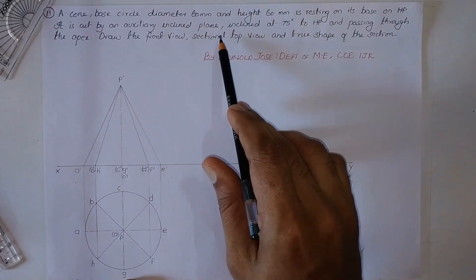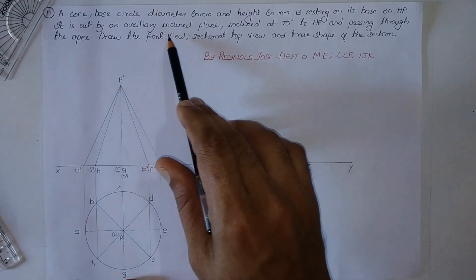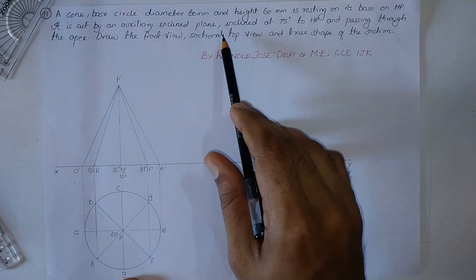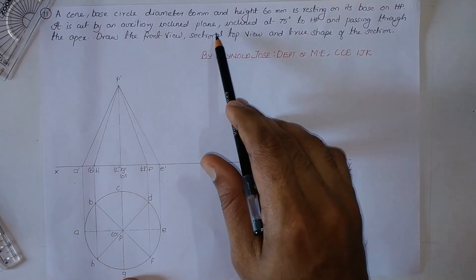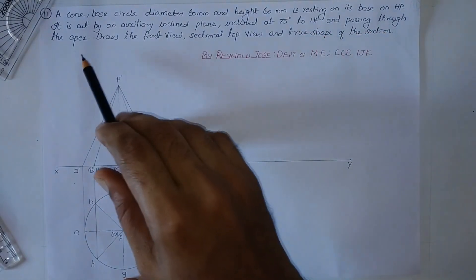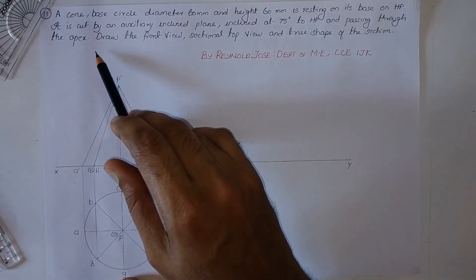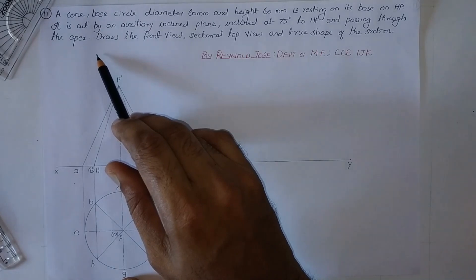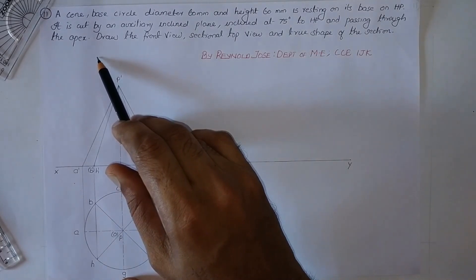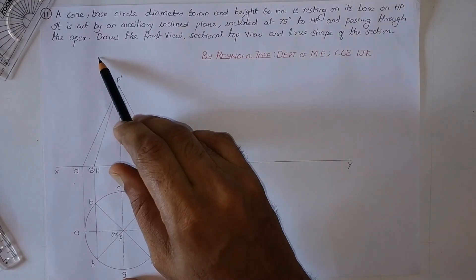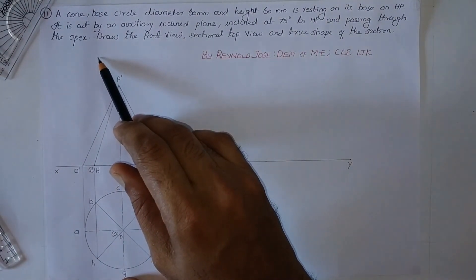It is cut by an auxiliary inclined plane, which in this case is the section plane itself because it is doing the cutting. The inclination of the auxiliary section plane is mentioned with respect to HP. So this 75 degrees with respect to HP will be visible only in the front view. Whatever inclinations are mentioned with respect to the horizontal plane will be visible in the front view, so we represent the section plane there. By default, this section plane will be perpendicular to VP.